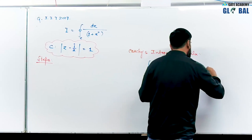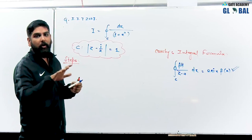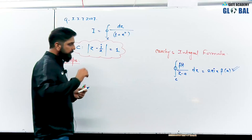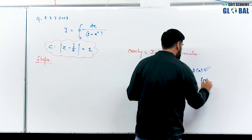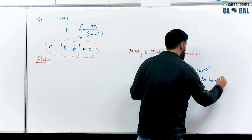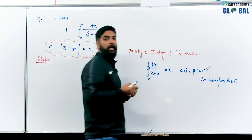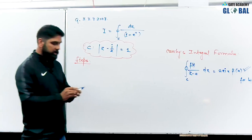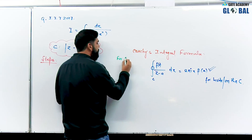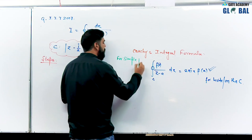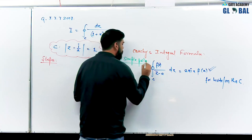Before applying this formula, we need to check whether the pole is inside, on, or outside the curve. For inside or on the curve, we apply this formula — this is for the simple pole. For multiple poles, we have a different formula. In the next question in this video, we will deal with the multiple pole case as well.